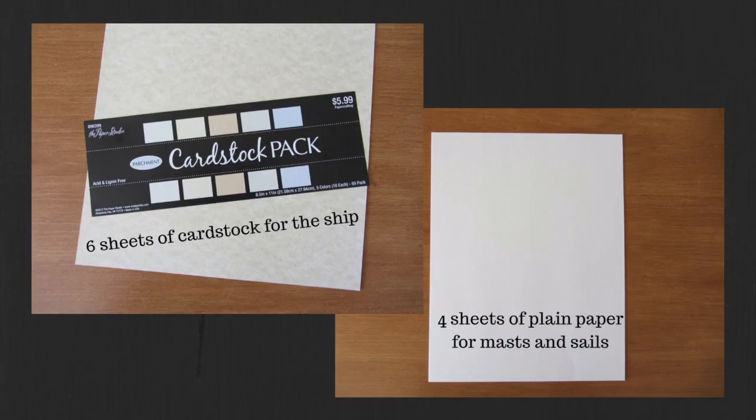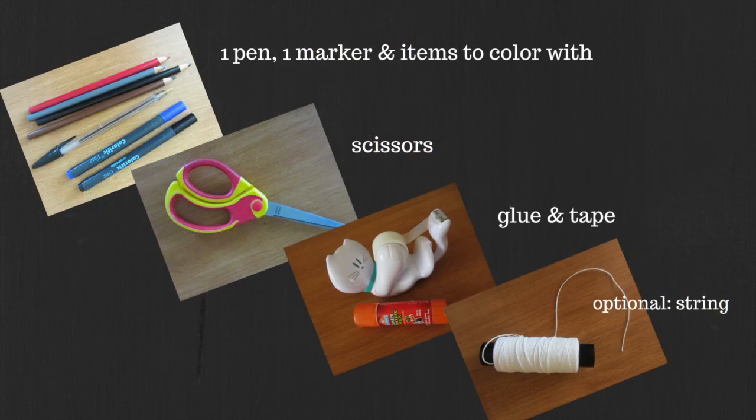You'll need six sheets of cardstock. I use brown so that my ship looks like it's made of wood. You'll also need plain paper, a pen, a marker, something to color with, scissors, glue, tape, and string which is optional.